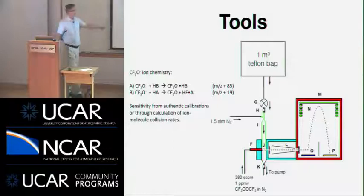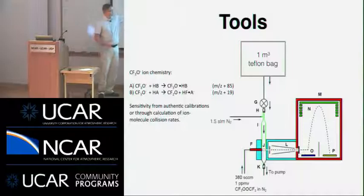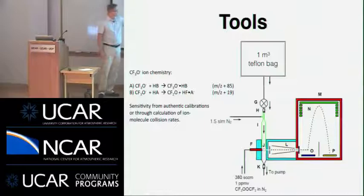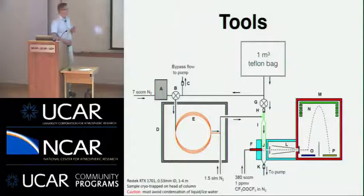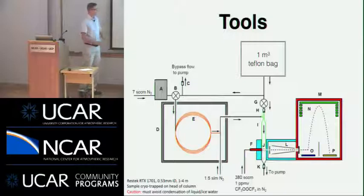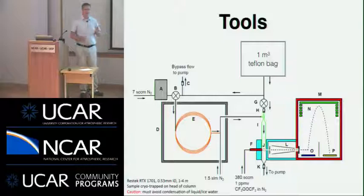In the lab, we use a small Teflon bag to do the photochemistry, put our reactive mixture into that bag, turn on some lights, make products, and sample the products into our instrument to make the product ions and measure the ion spectrum using a time-of-flight mass spectrometer. More recently, we've added a GC column as a front end to this instrument. The GC column allows us to separate different molecules that might show up at the same mass, so we can separate out different isobaric species.